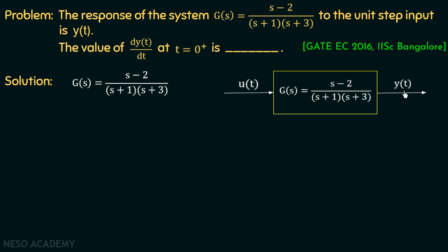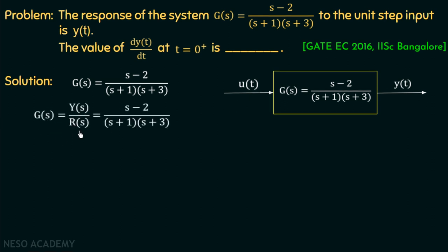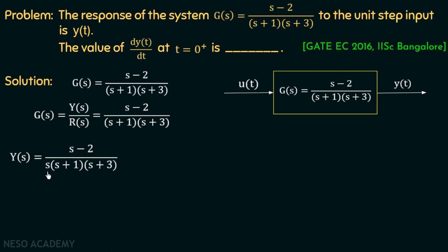We will first find y(t). G(s) is the transfer function and we know that it equals the Laplace transform of output over the Laplace transform of input: G(s) = Y(s)/R(s) = (s-2) / [(s+1)(s+3)]. Since the input is a unit step signal, R(s) = 1/s. Substituting, Y(s) = (s-2) / [s(s+1)(s+3)]. Applying partial fractions: Y(s) = A/s + B/(s+1) + C/(s+3).